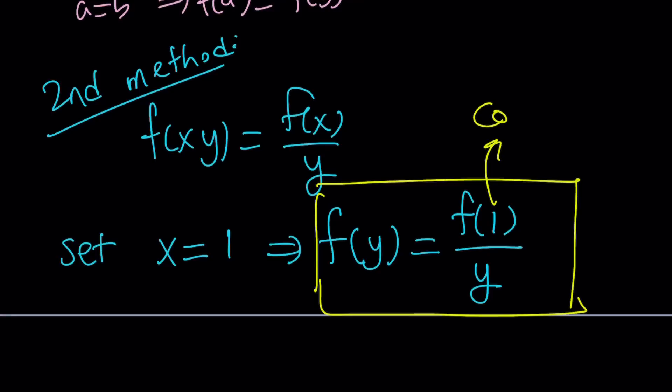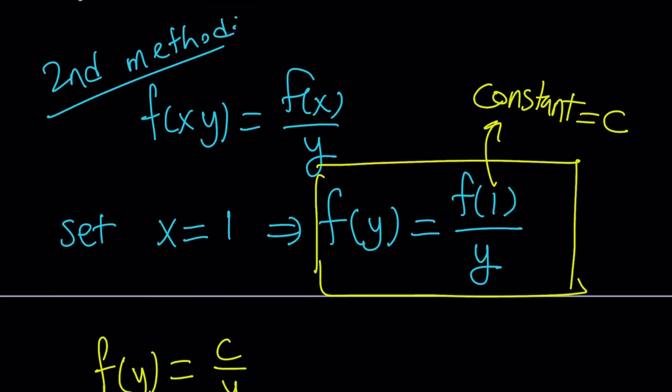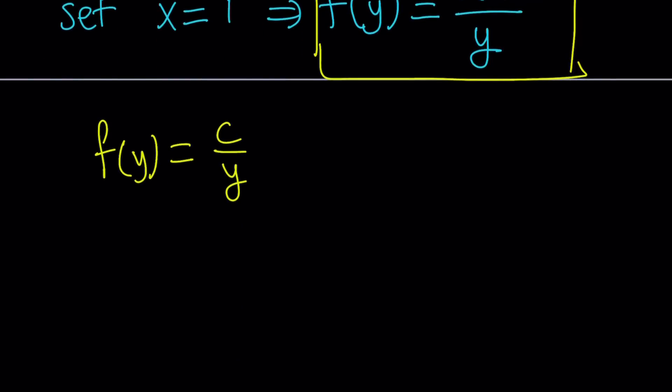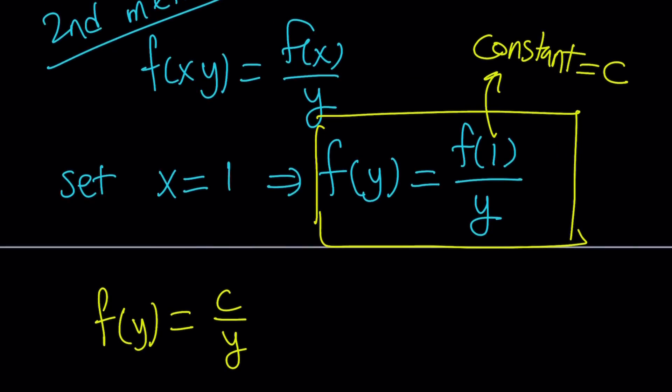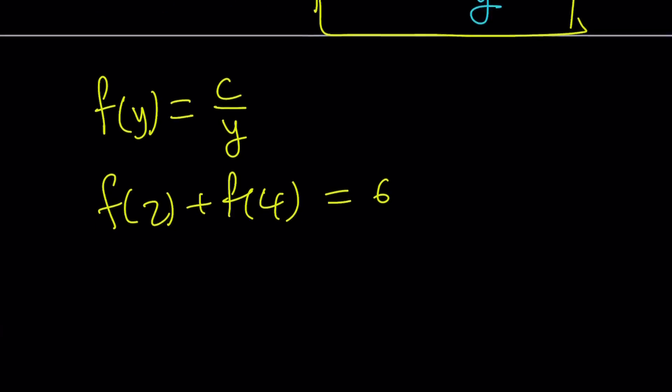So x is 1. So the numerator is going to give me f(1) divided by y. Notice that y stays as y, x is replaced. So what is so cool about this equation is that f(1) is a constant. And what do we use for constants? We're going to use c. Hopefully you see what I see. And we can write f(y) as c over y. So I replace f(1) with c. Don't worry about it. We'll take care of that later. I mean, if you want to find f(1), you can replace x and y with 1. That's going to give you f(1) equals f(1). It's not going to help at all. So what do we know? We know that f(2) plus f(4) is equal to 6.